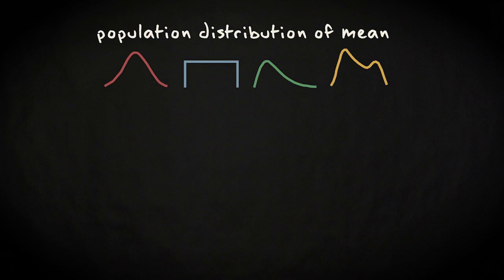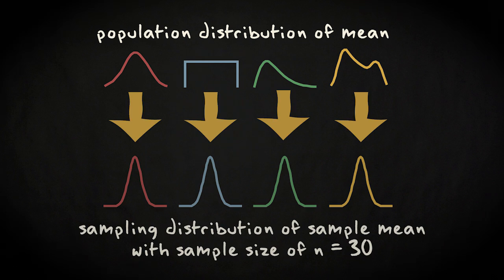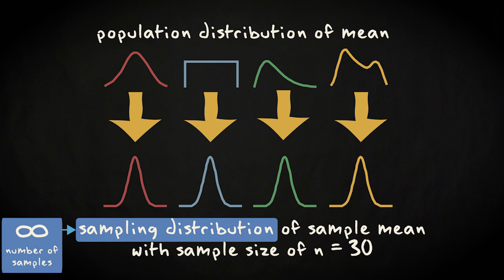Take a look at these possible shapes of population distributions. This is what the sampling distributions of the sample mean would look like if you drew samples of n equals 30. This means that you draw an infinite number of simple random samples of 30 respondents from the population and display all the resulting sample means in a distribution.